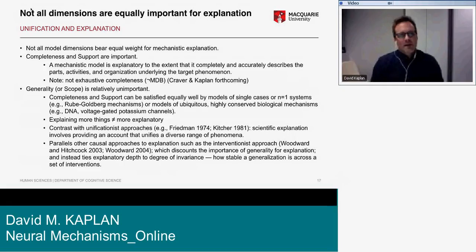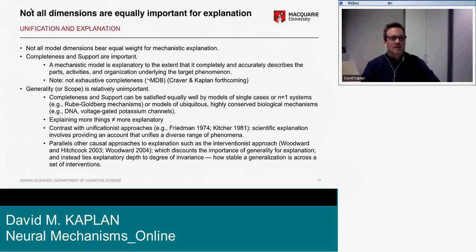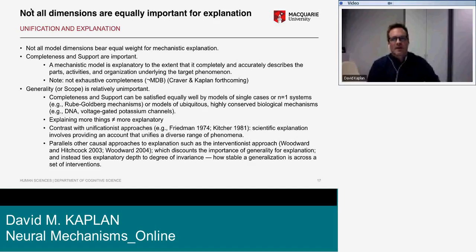The important point is that not all model dimensions bear equal weight for mechanistic explanation. Completeness and evidential support are important — a mechanistic model is explanatory to the extent it completely and accurately describes the parts, activities, and organization underlying the phenomenon. Generality is relatively unimportant. Completeness and support can be equally satisfied by models of single cases — like a Rube Goldberg mechanism — or by models of ubiquitous conserved mechanisms like DNA or potassium channels.